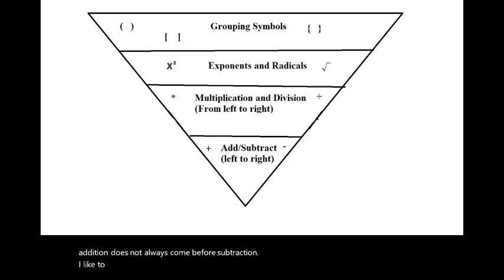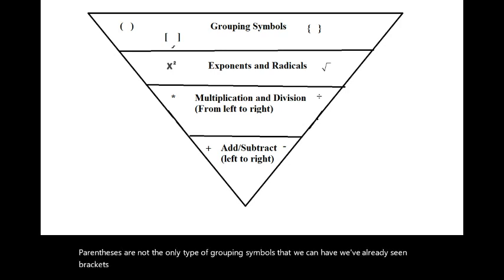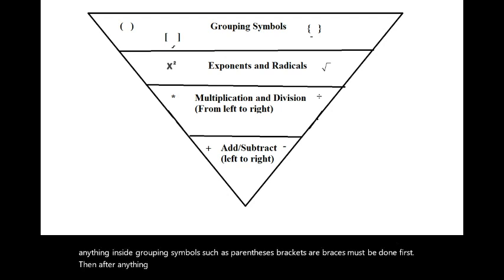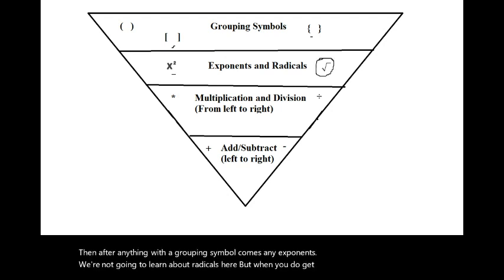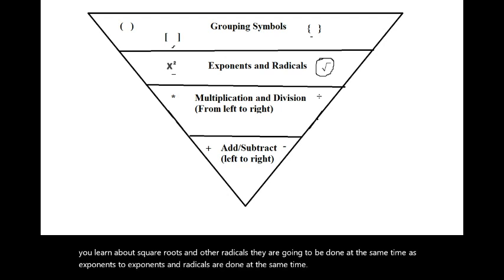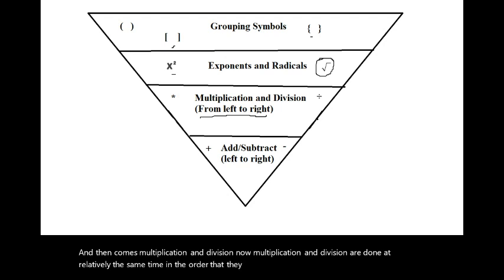I like to teach order of operations as a system of hierarchy. Parentheses are not the only type of grouping symbol — we also have brackets and braces, which work the same way. Anything inside grouping symbols must be done first. Then come exponents and radicals, which are done at the same time. After that comes multiplication and division, done at relatively the same time in the order they appear from left to right — so division might come before multiplication depending on the expression.